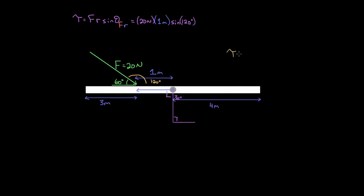To recap: you can find the torque from a force by taking the perpendicular component of that force — perpendicular to R — and multiplying by the magnitude of the R vector, where R points from the axis to the point where the force is applied. Or you can use the formula torque equals F times R times sine theta, where F is the entire magnitude of the force, R is the magnitude of the R vector, and theta is the angle between the force and the R vector — whether tail to tail, head to head, or the supplementary angle — since sine of supplementary angles are equal.